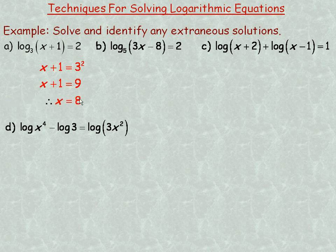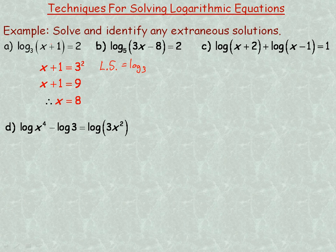We can check to make sure that's a solution — that's how you find extraneous solutions — by taking that 8 and substituting it back into the equation. On the left side we have the logarithm base 3 of 8 plus 1, which is 9. That does equal 2, because 3 raised to the power of 2 is equal to 9. So it does check.